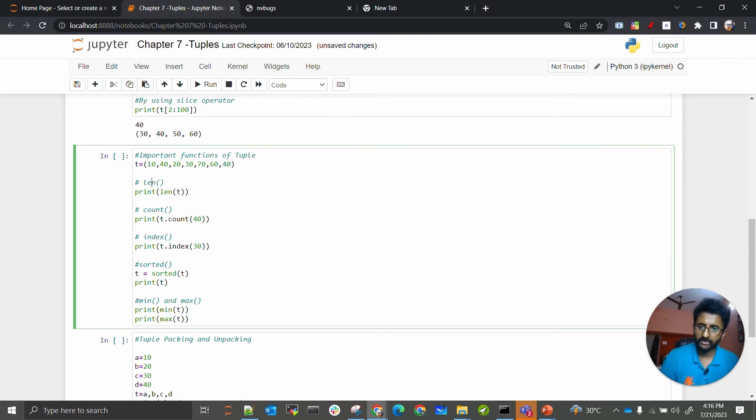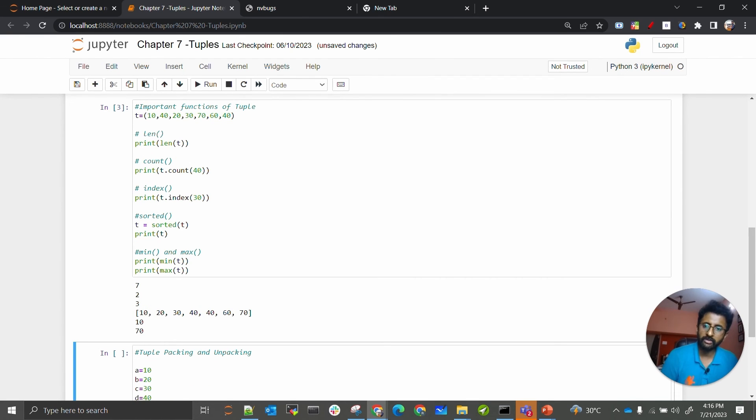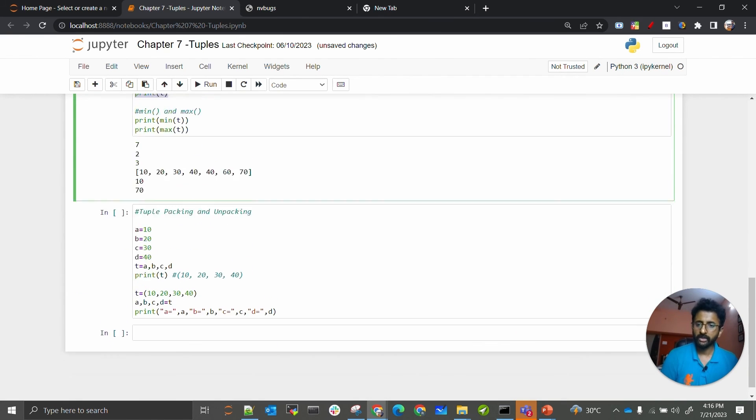Similarly, there are different functions and there are examples—count, index, sorted, min, max. I am just doing Shift-Enter just to give you the outputs of these calls.